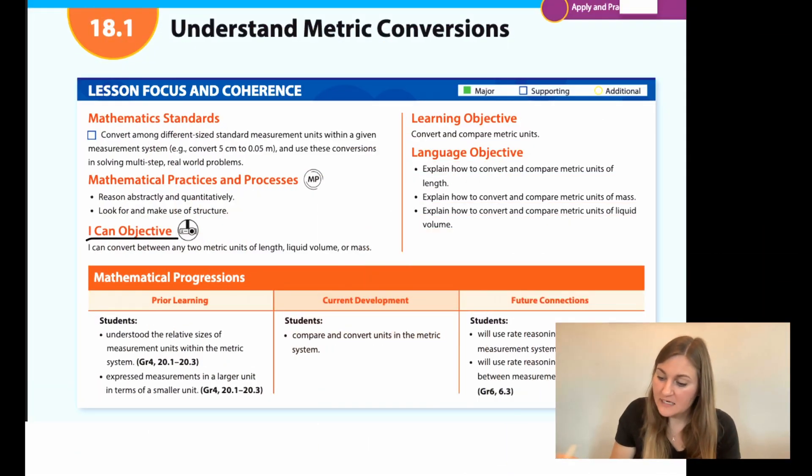I'm going to start off by going over the I can objective. It says I can convert between any two metric units of length, liquid volume, or mass. The learning objective is to convert and compare metric units, and the prior learning is that students understood the relative sizes of measurement units within the metric system, and students expressed measurements in a larger unit in terms of a smaller unit.